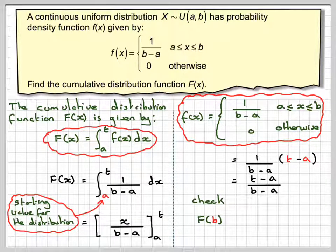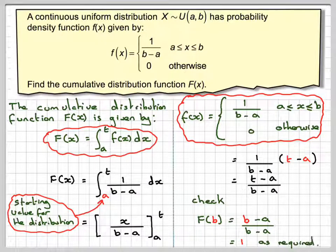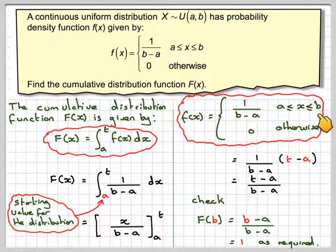Now, if we were to do F(b), so put in b instead of t, we're going to have b minus a over b minus a, which is equal to 1, which is what we expect for a cumulative distribution function. When we get to the last value, we need to have the probability of certainty, which is 1.